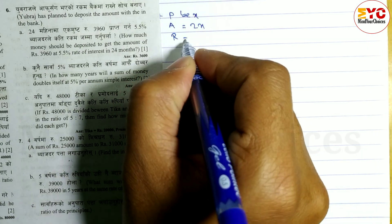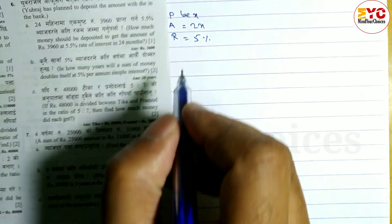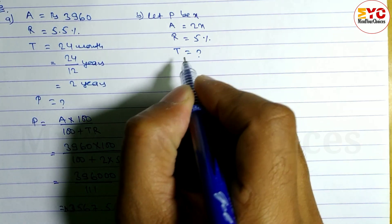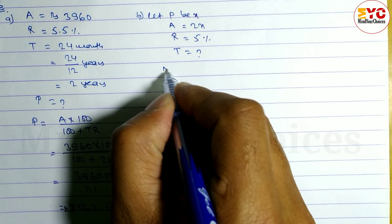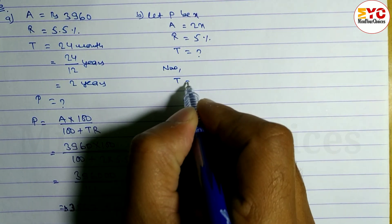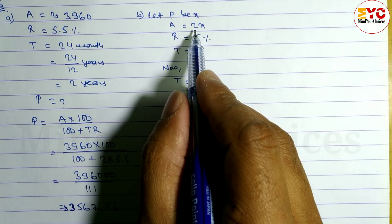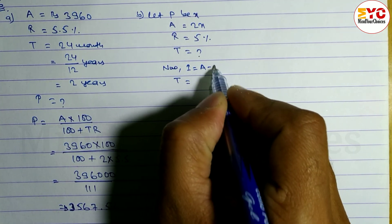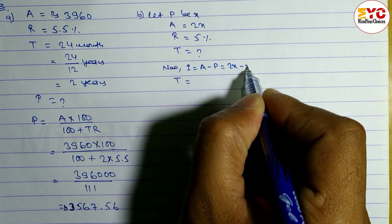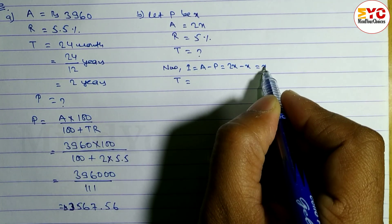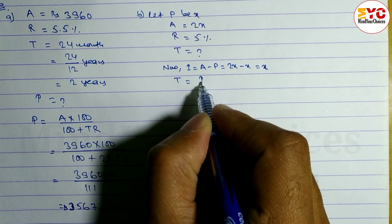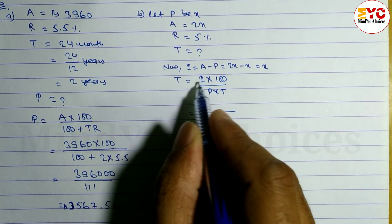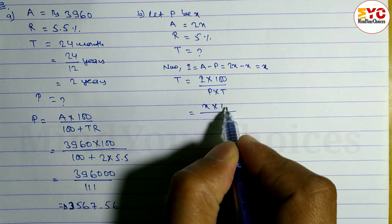Rate of interest in 5 years — haami ke ni gaalne paane yahan niri? Time ni gaalne paane. T is equal to what? T ko formula ke huncha? Now, interest ni gaalne paadne first. I ko formula ke huncha? A minus P. A = 2X, so 2X minus X is equal to X. Interest = X.